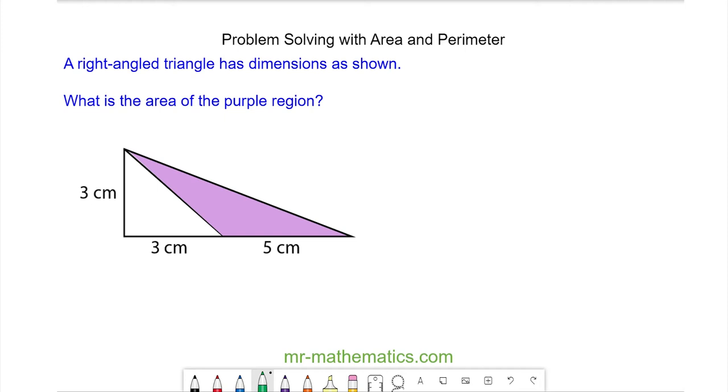In this question we're going to calculate the area of a purple region. This is a right-angled triangle. To do this we're going to work out the area of the big right-angled triangle where the base is 3 plus 5 which is 8 centimeters, the height is 3 centimeters.